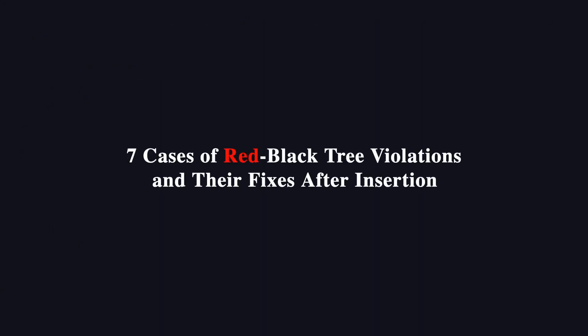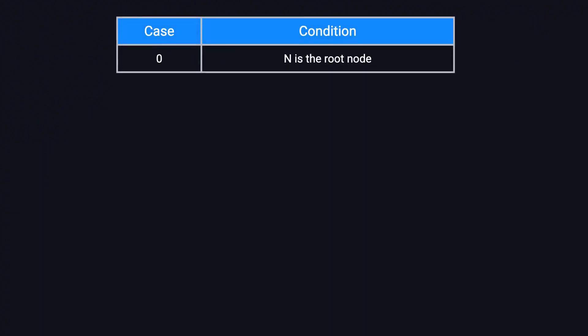Now, let's go over the different cases of fixing red-black tree violations after insertion. The first case is case zero. If the newly inserted node is the root, it violates the rule that the root must be black. The fix is straightforward. Just recolor the root to black.